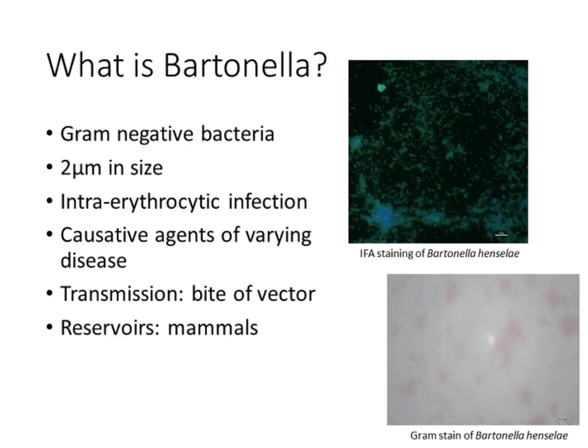Bartonella are gram-negative bacteria that are about 2 microns in size, and we know that they cause an intra-erythrocytic, or red blood cell, infection. They are the causative agents of varying diseases. Transmission typically occurs via traumatic contact with infected animals or by blood-sucking arthropods, most likely through inoculation of host skin lesions by contaminated insect feces. From the dermis, the infection spreads to a still enigmatic primary infection niche, likely including the vascular endothelium, and then further into the bloodstream, where bacteria invade red blood cells and cause a long-lasting intra-erythrocytic bacteremia as a hallmark of Bartonella infection.